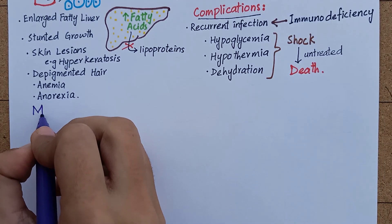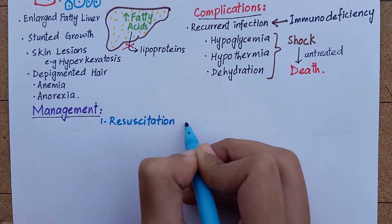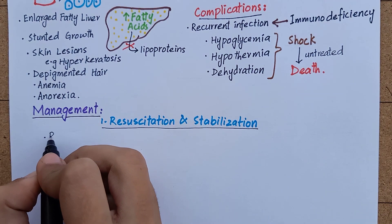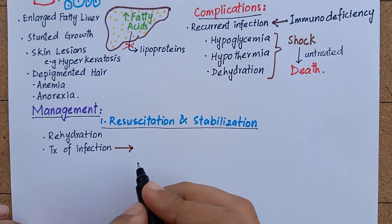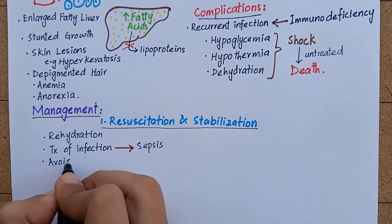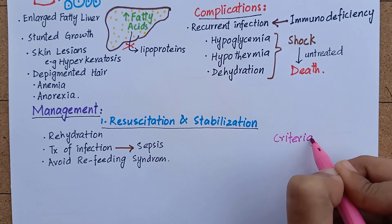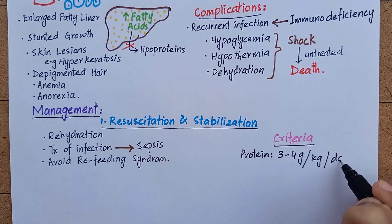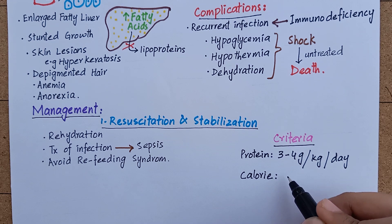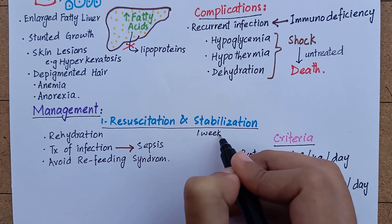The management of protein energy malnutrition is divided into three phases. The first is resuscitation and stabilization, in which the main goal is rehydration and treatment of ongoing infection that may progress to sepsis, and to avoid refeeding syndrome by giving nutrition slowly and carefully. The criteria for protein intake is 3 to 4 grams per kilogram body weight per day for kwashiorkor, and 150 to 200 calories per kilogram body weight per day for marasmus, starting with initial small doses. This phase usually lasts for approximately one week.